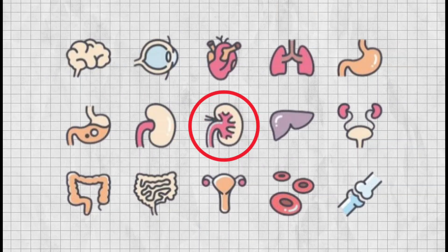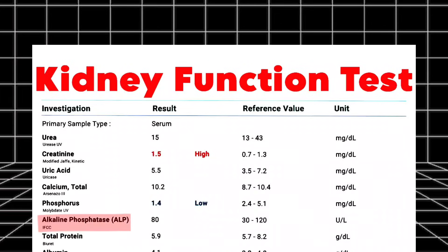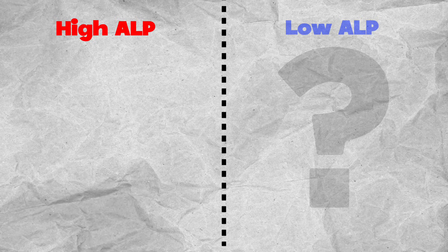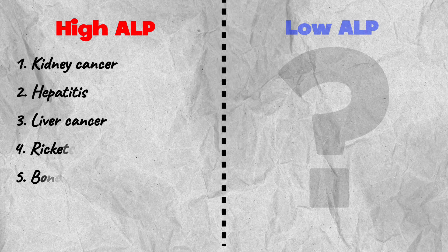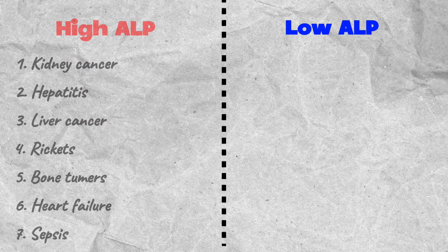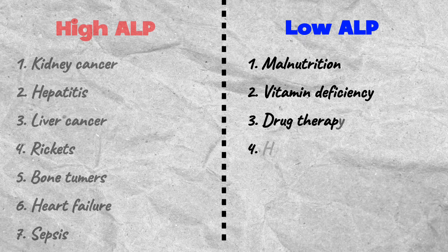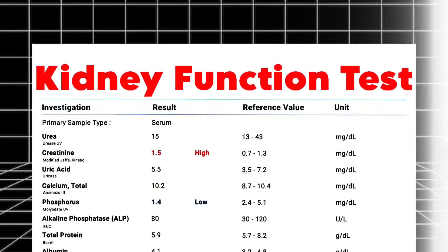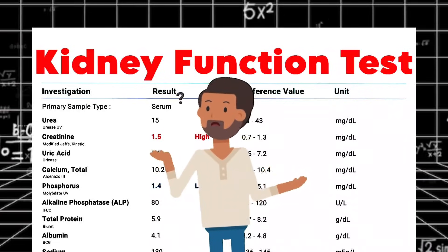Low phosphorus in blood is called hypophosphatemia, seen in hyperparathyroidism, vitamin D deficiency, chronic alcoholism, diabetic ketoacidosis, certain medications, burns, and respiratory alkalosis. Next in the kidney function tests is alkaline phosphatase, also called ALP. Alkaline phosphatase is an enzyme expressed in the kidneys, liver, and bones. The normal level of ALP in blood is between 30 to 120 units per liter.